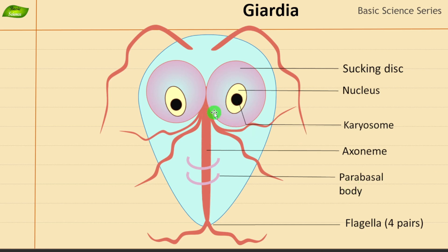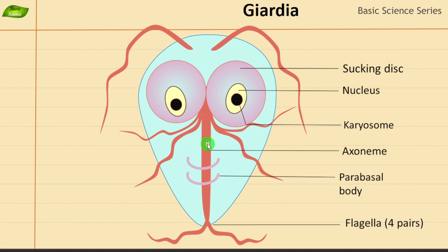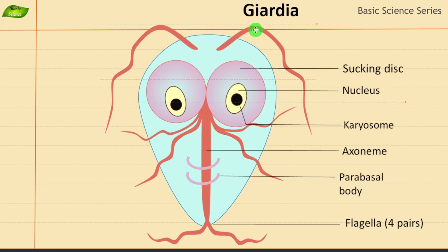The axoneme is an elongated structure and a vital component found in the flagella of Giardia lamblia. It is a microtubule-based structure responsible for the wave-like motion of Giardia's flagella. Microtubules provide strength and support, and this wave motion enables the parasite to move through the host intestine. It plays a key role in pathogenicity as the parasite needs to move from one place to another.